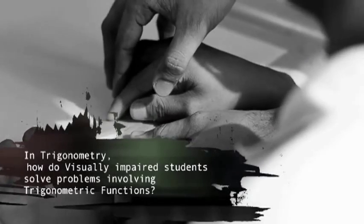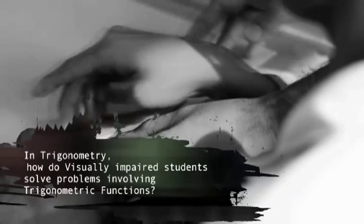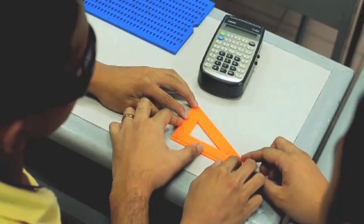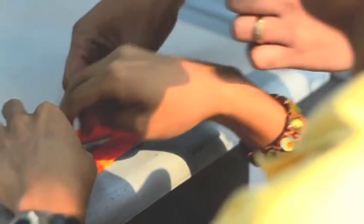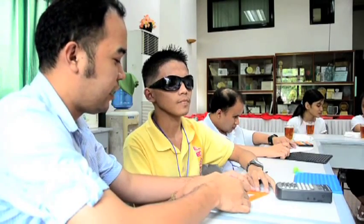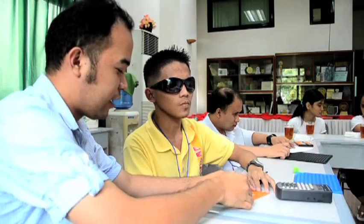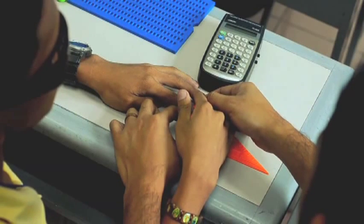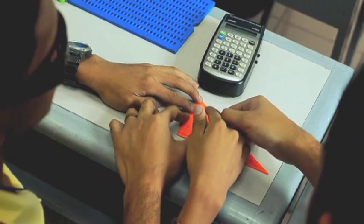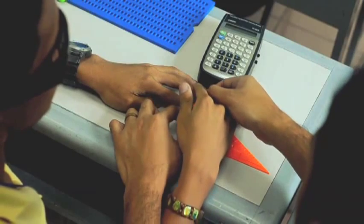In trigonometry, how do visually impaired students solve problems involving trigonometric functions? Okay Mike, this is a tactile model of a right triangle. Now we have here the parts of the right triangle. This one is the longest part and this is called the hypotenuse. And this one here is the side across the right angle, this is called the base. And this one here is the altitude. Now it is very important that we clarify the names of the angles for us to clearly get the trigonometric functions of each angle. If we consider this angle here, angle A, what is the opposite side of angle A? The opposite side of angle A is the base. And the adjacent side? The adjacent side is the altitude.